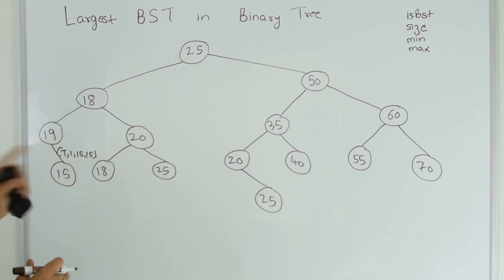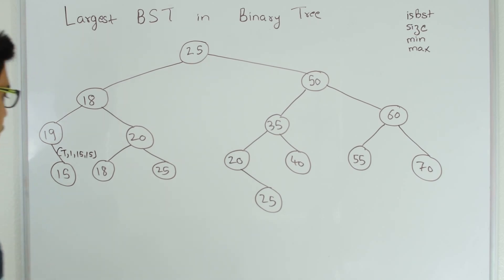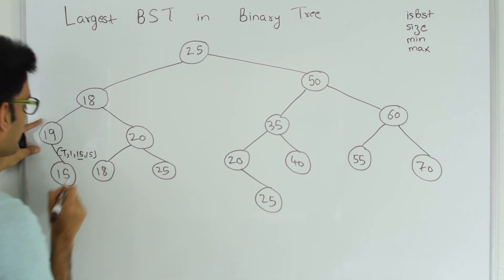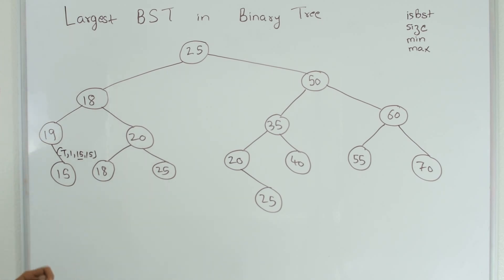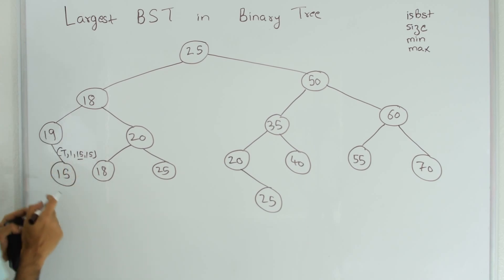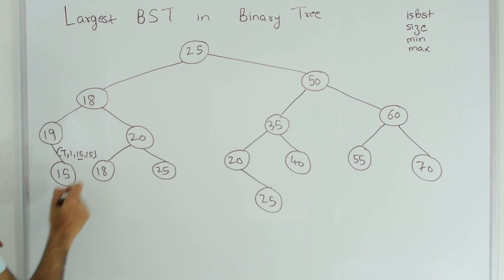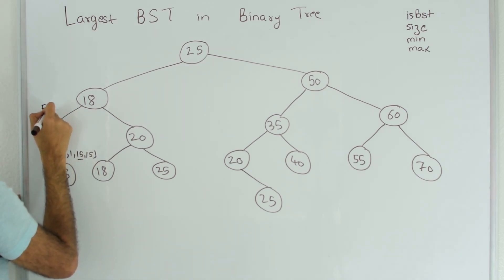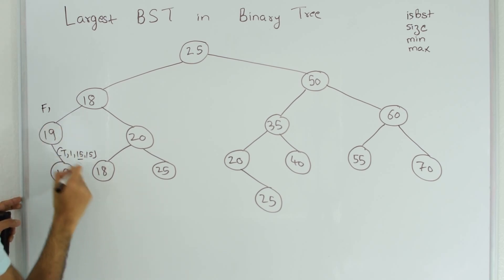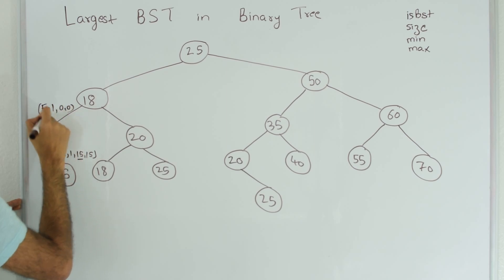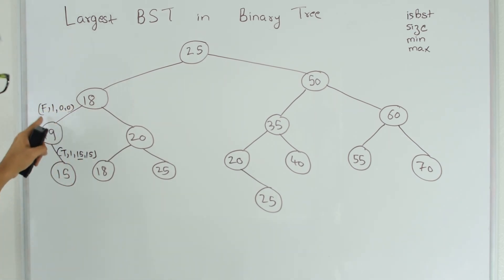Node 19 gets true from its right side. What 19 needs to verify is: with 19 included, is it still a binary search tree? For that to happen, the minimum on the right side, which is 15, should be greater than the root value 19. But 15 is not greater than 19, so with 19 included this is not a binary search tree. So 19 returns false, with the largest BST size found being 1.